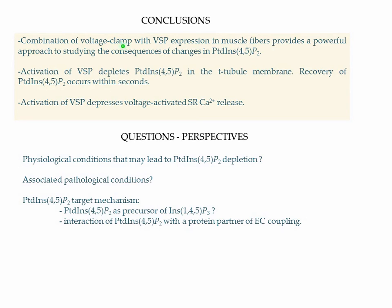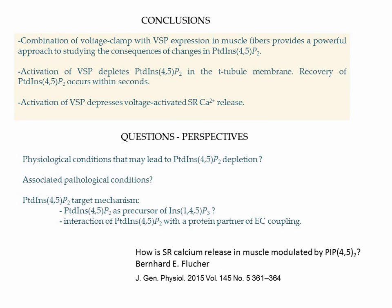Conclusions: the combination of voltage clamp with VSP expression makes it possible to study the consequences of changes in PIP2 in the plasma membrane of muscle fibers. Activation of VSP depletes PIP2 in the T-tubule membrane, and equally interesting, recovery of PIP2 is very fast — it occurs within seconds. Main point: activation of VSP, and we believe consequent loss of PIP2, depresses voltage-activated SR-calcium release. Open questions remain: could there be physiological or pathological conditions that lead to PIP2 depletion so as to affect SR-calcium release? And what is the PIP2 target mechanism? We cannot exclude that PIP2 would act as a precursor of IP3, but we also suspect that PIP2 may interact with a protein partner of the EC-coupling machinery. I would strongly recommend reading a very insightful comment recently published by Bernhard Flücher in JGP. Thank you so much for your interest.